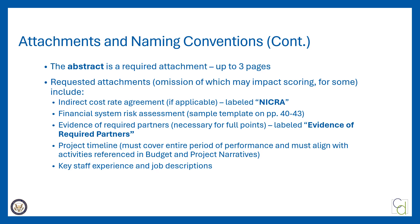The abstract is a required attachment. It should include a project overview as well as a series of details outlined on pages 28 and 29 of the FOA. Requested attachments do not have their own direct points, but the omission of some of these could impact your overall scoring. If you're requesting indirect costs based on a negotiated indirect cost rate agreement, you should attach it and label it NICRA — this attachment does not impact scoring. There is also a template for the financial system risk assessment with additional information on pages 40 to 43 of the FOA; this attachment also does not impact scoring.